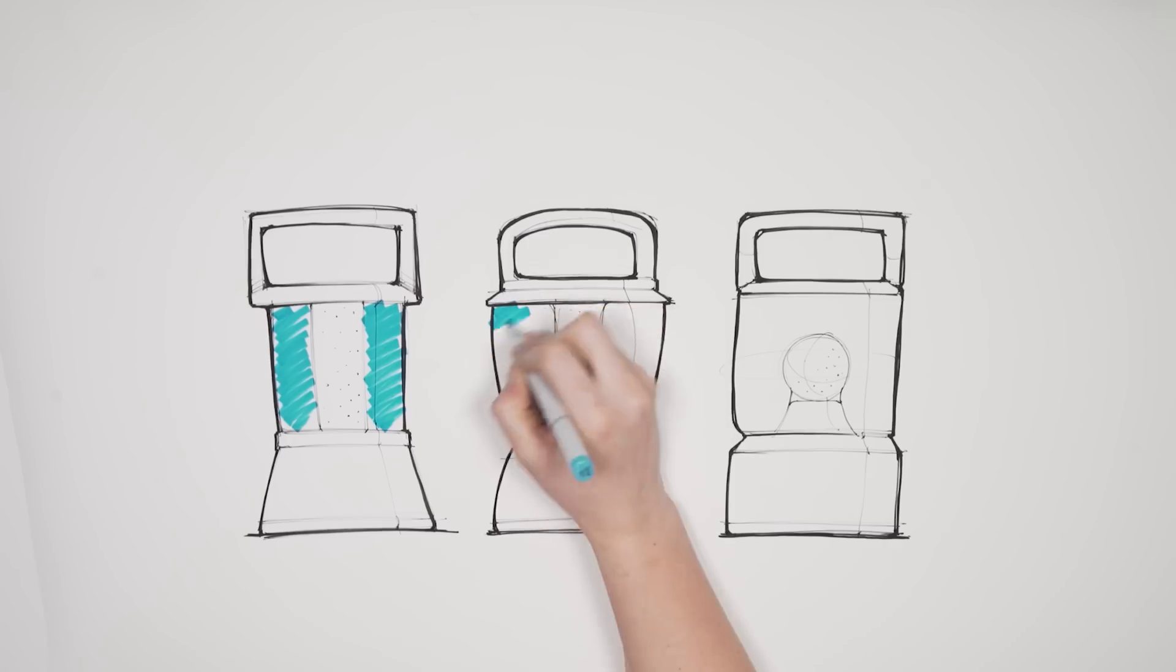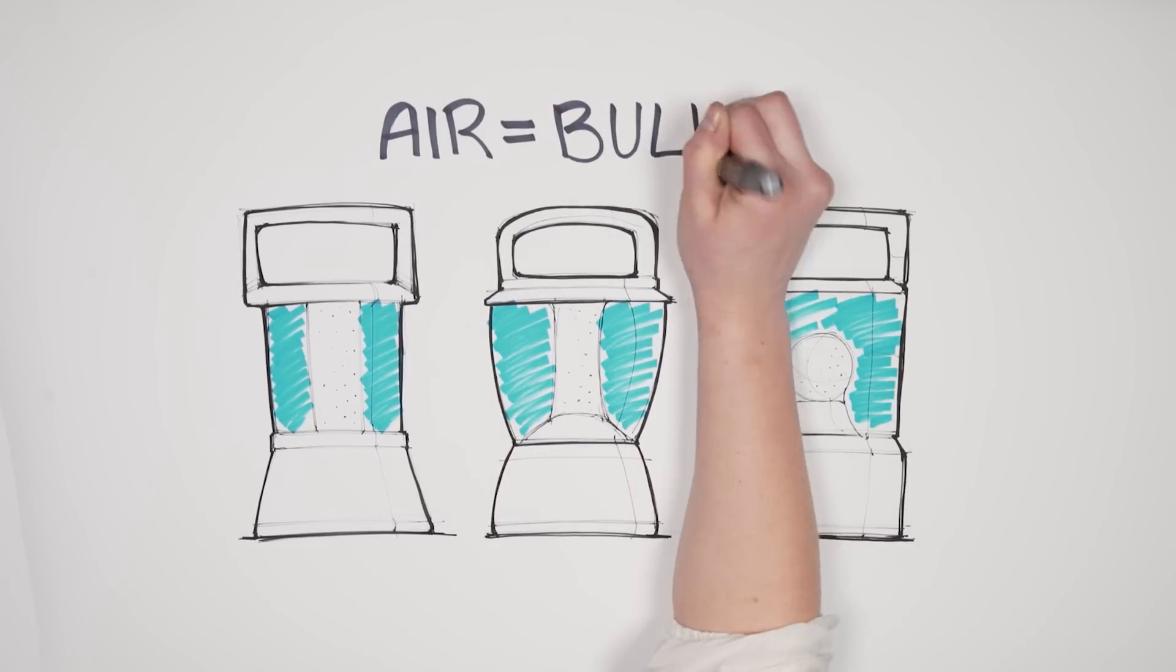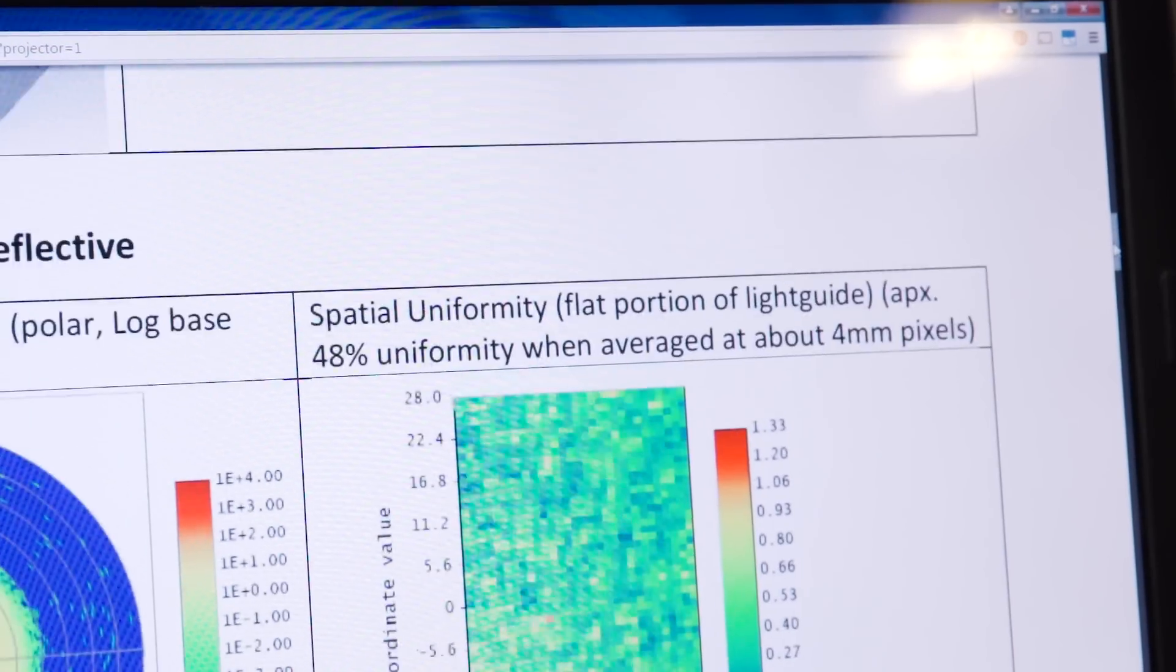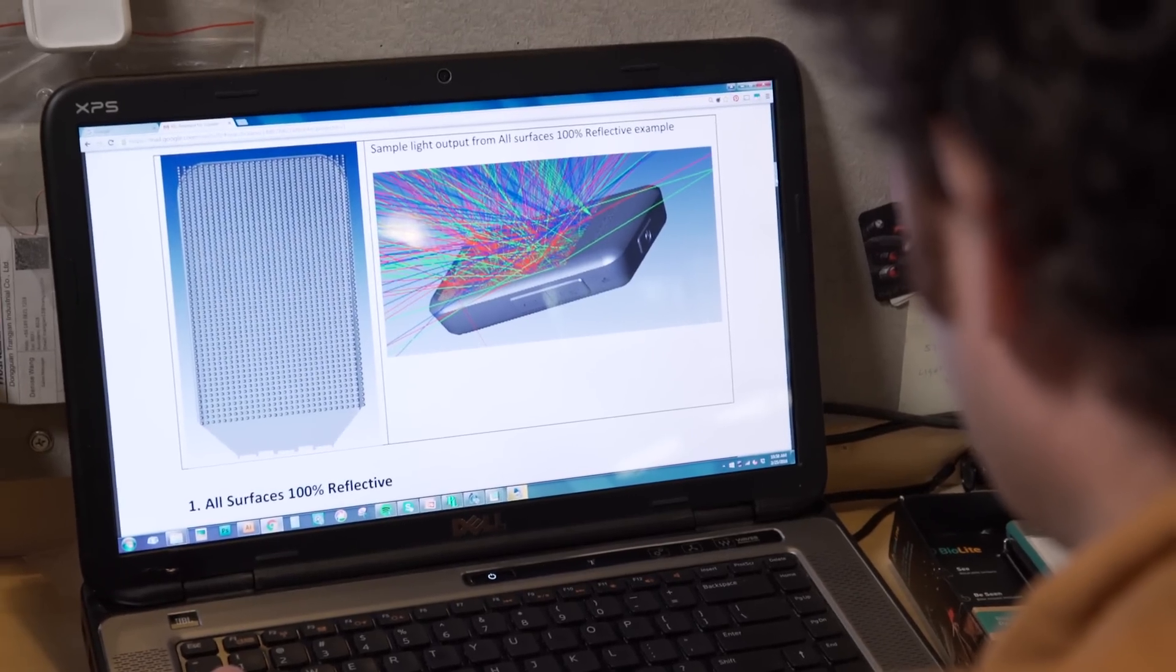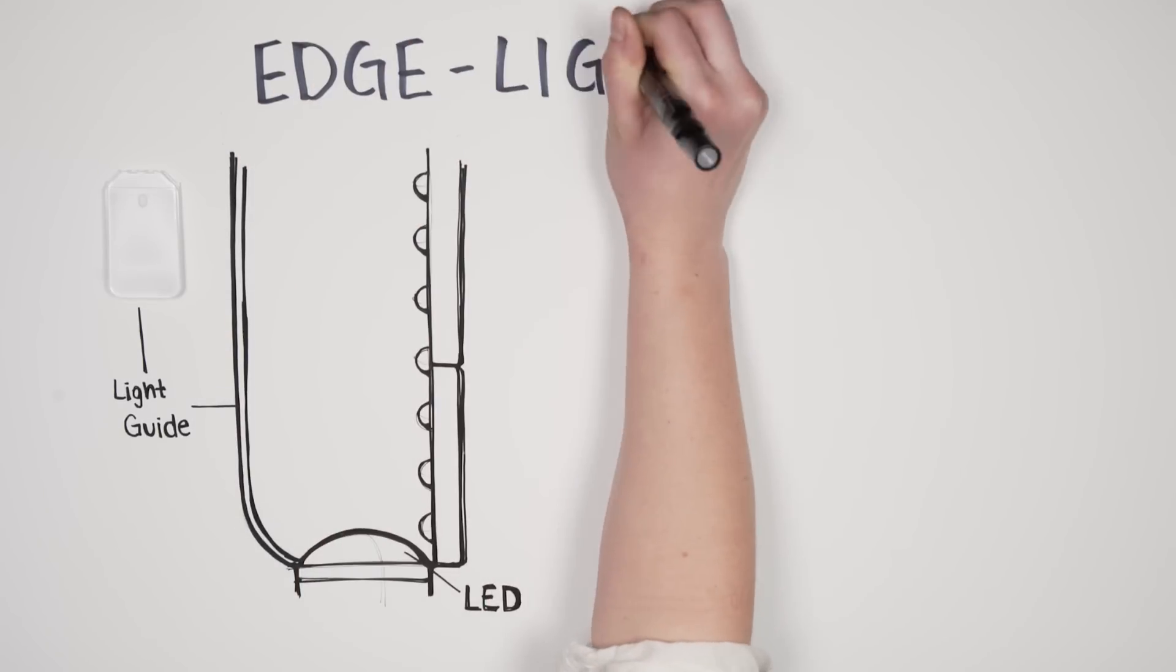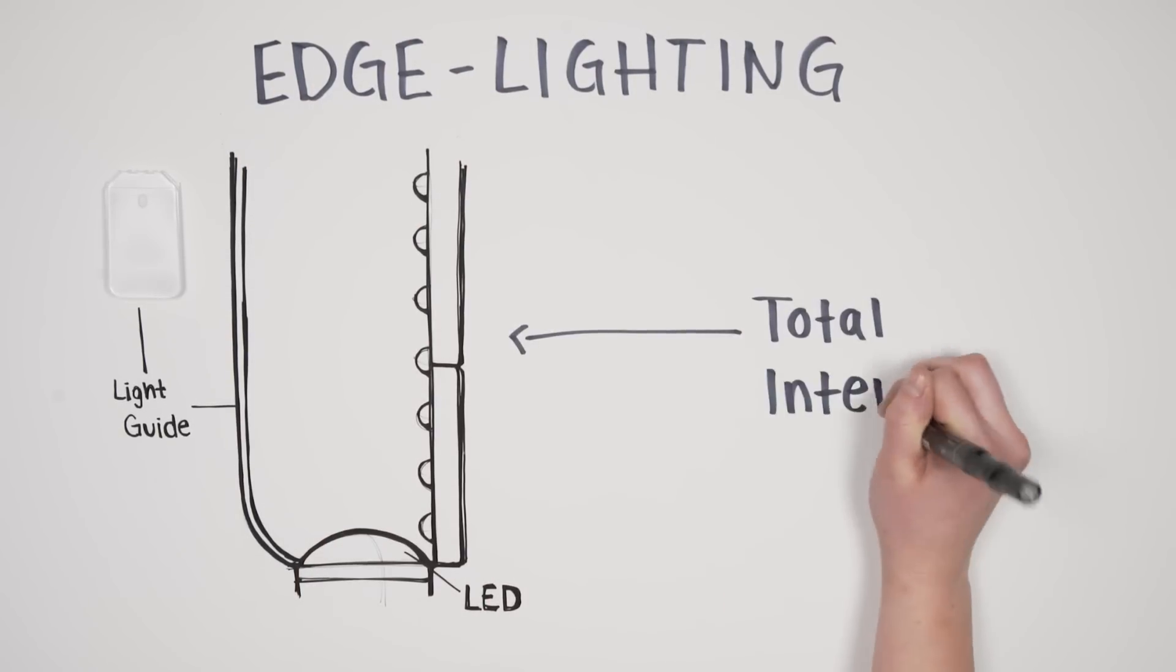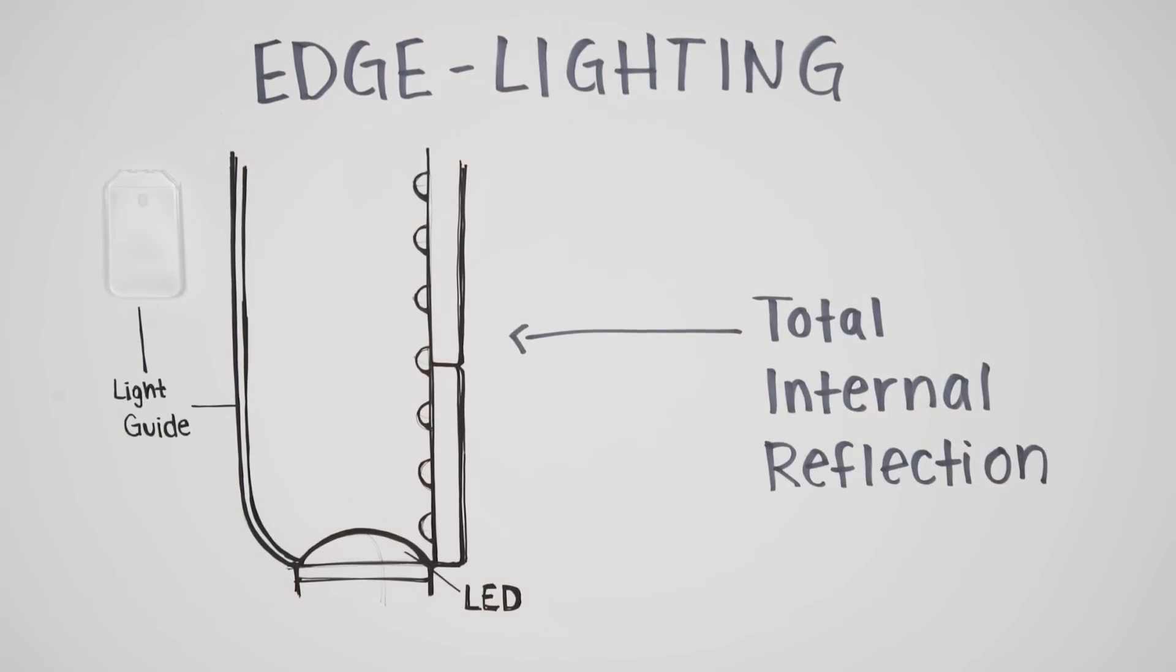Here's the tech that makes it happen. Traditional lanterns have a lot of wasted airspace inside their diffuser. We've eliminated that airspace by designing an edge-lit lens instead of that cavernous globe. Edge lighting utilizes total internal reflection, the same energy-efficient principles as fiber optics.